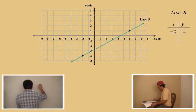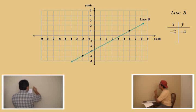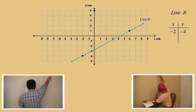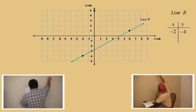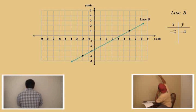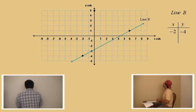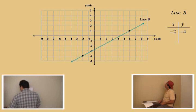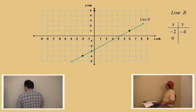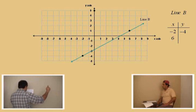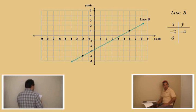Now let's go up that line to that other point. What is the x value for that point, Charlie? Six. Very nice. And what's the y value? One. Very nice, Charlie.